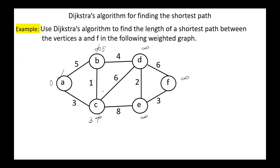The unvisited vertices are C, B, D, E, F. The vertex with the smallest distance is vertex C. We set C as the current node. C is connected to E with distance 8: 3 plus 8 equals 11, less than infinity, so we update this value to 11. C to D: 3 plus 6 equals 9, less than infinity, so we update this value to 9. C to B: 3 plus 1 equals 4; the current distance is 5, so we update this value to 4. We are done with C; we mark it as visited.